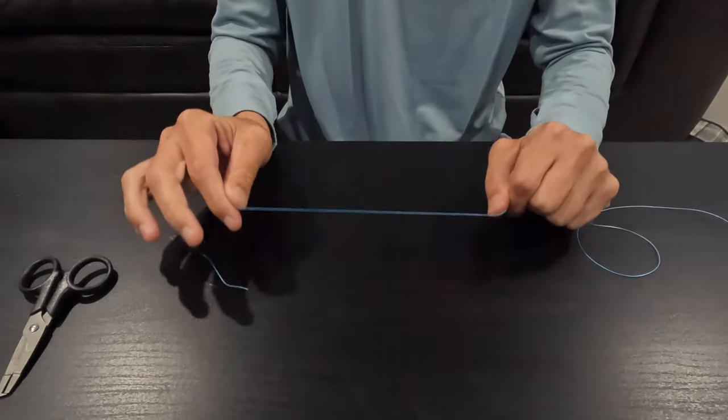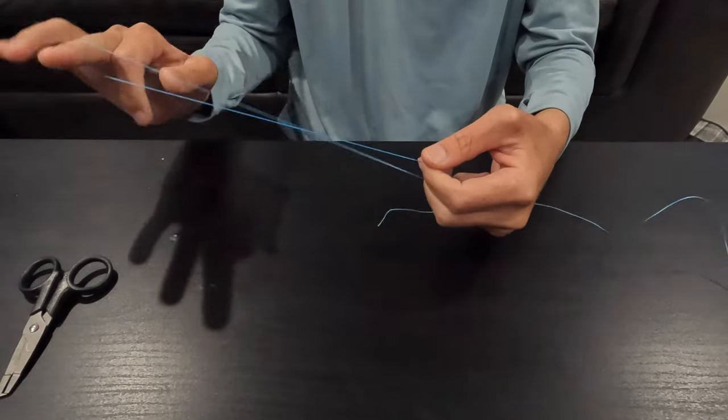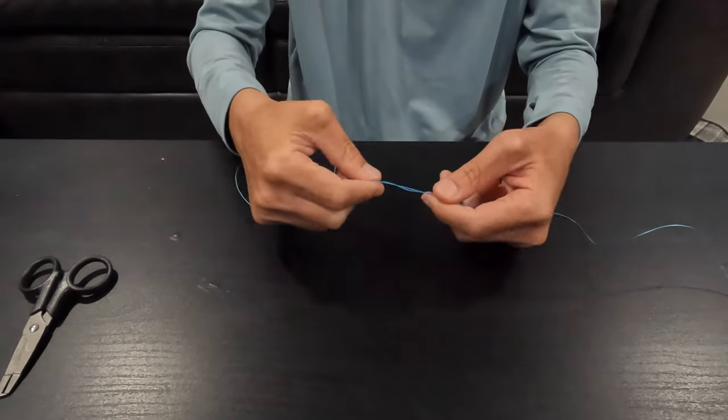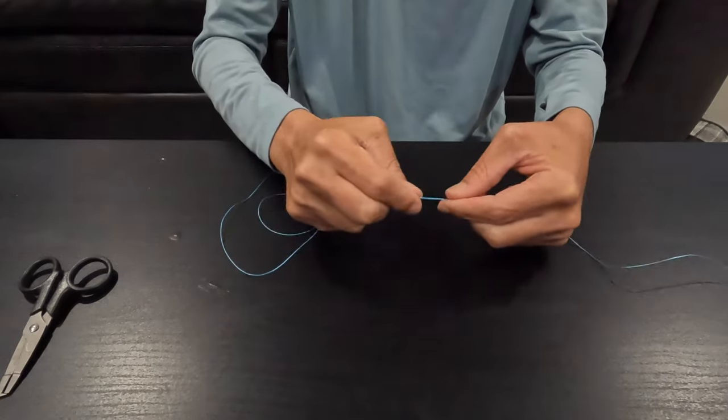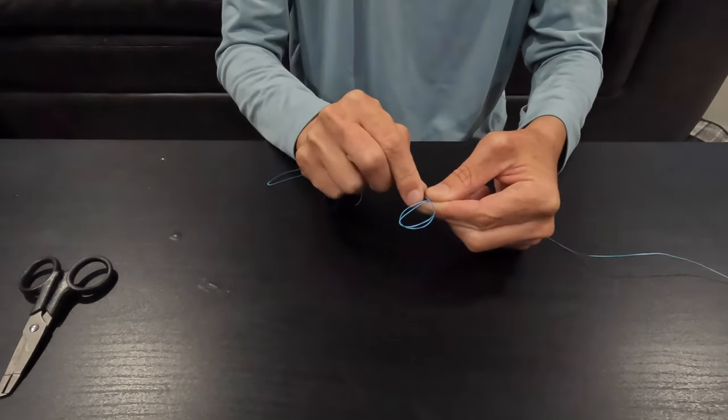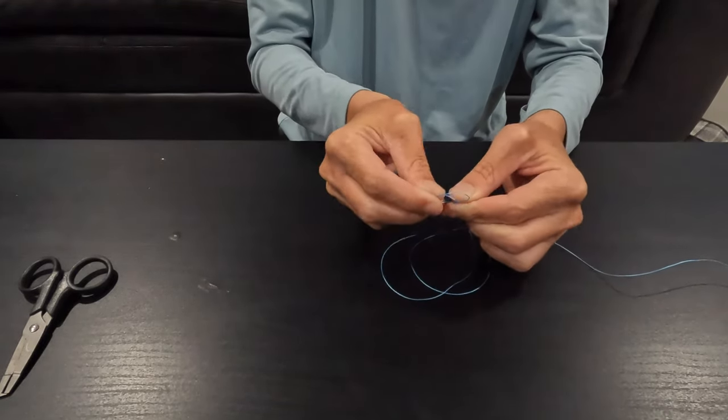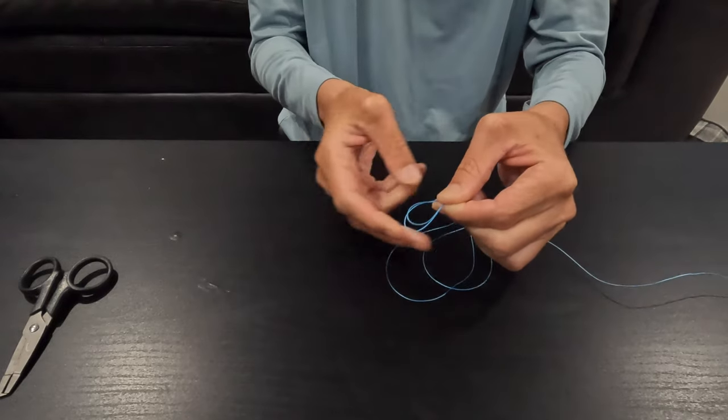So the first thing that we need to do for our knot here is we need to tie a simple spider hitch. And if you guys don't know how to do one, I'll show you quickly. You just need to take your doubled over line, make a loop like so. Make a loop.